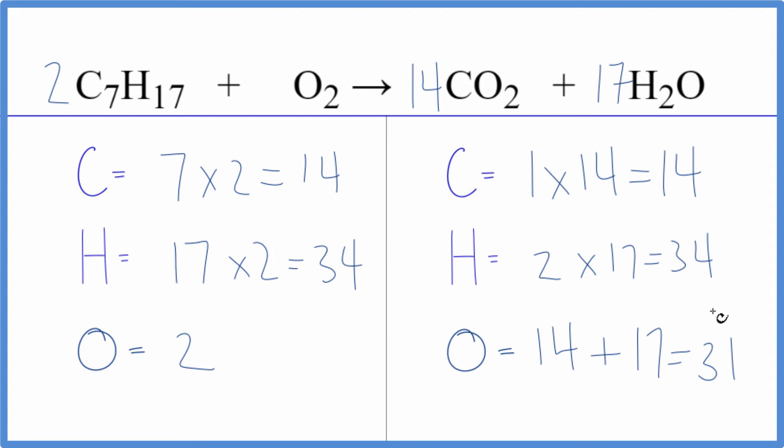The hydrogens are balanced. And we do need to update the oxygen here to accommodate this. So instead of the 14, we have two times 14, that gives us 28. Plus we have the 17 times one, 17 there. So 45 oxygen atoms.